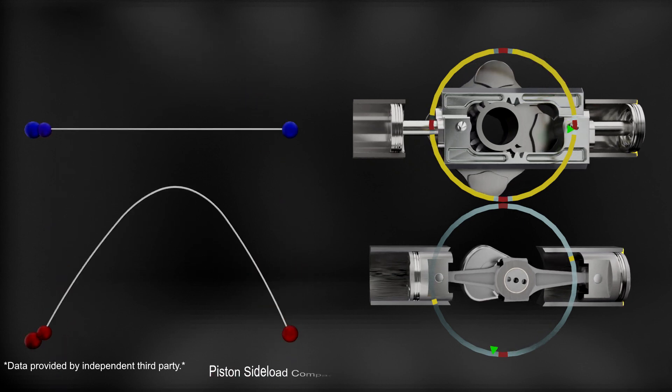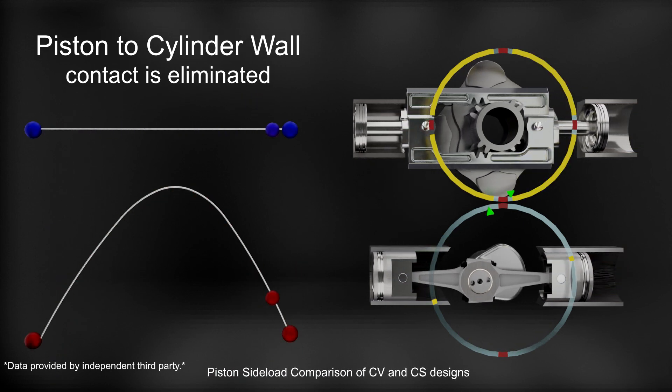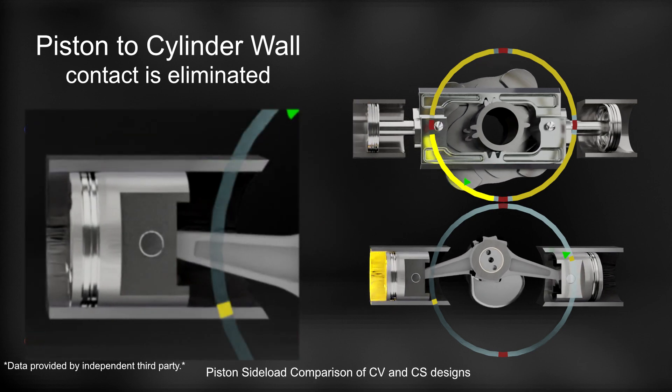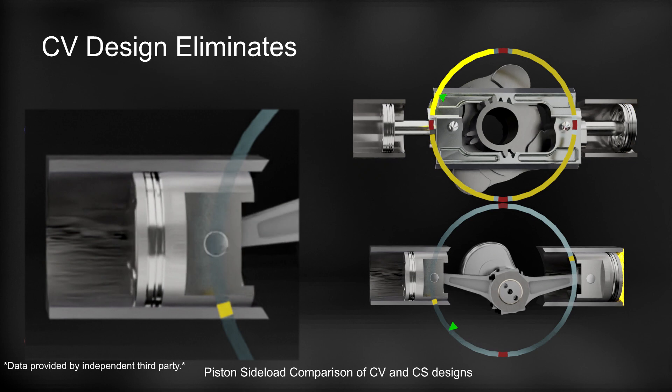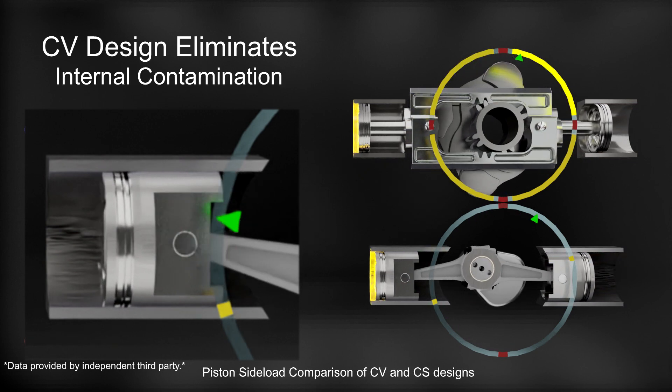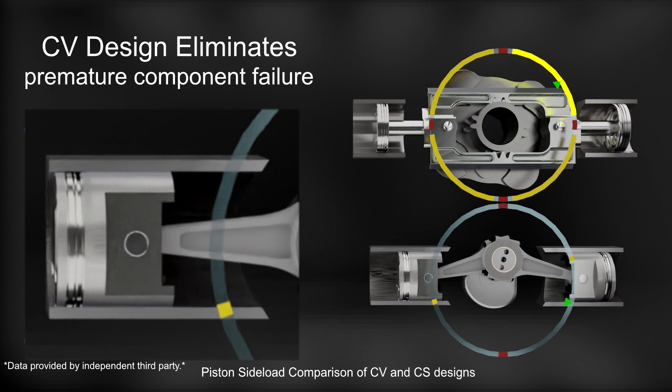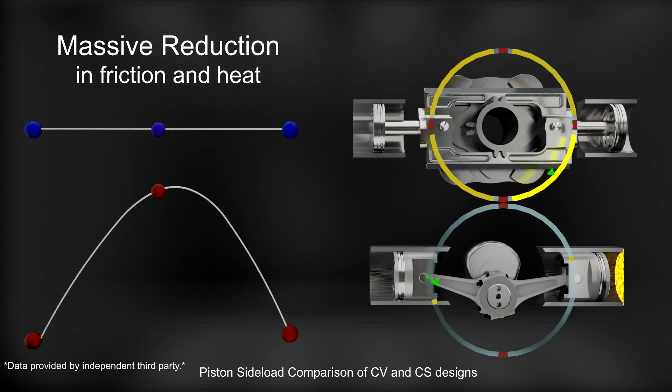Let's compare the piston side load of a standard crankshaft engine. The CV design inherently has no piston to cylinder wall contact. This eliminates piston wear, cylinder wall scoring, internal contamination and related premature component failure while also providing increased thermal efficiency through the reduction of friction related heat.